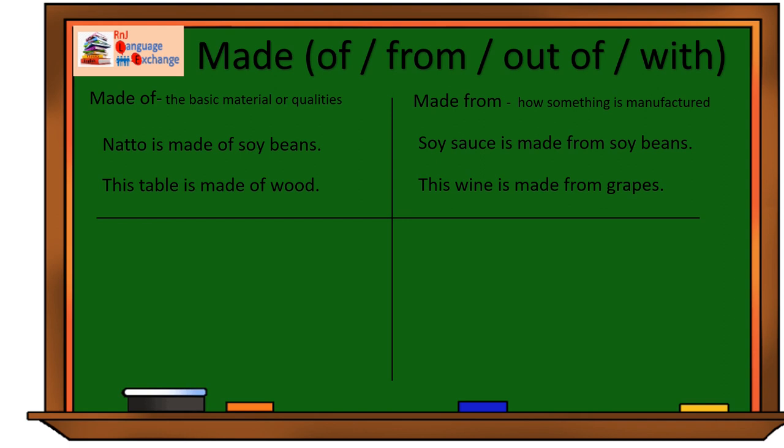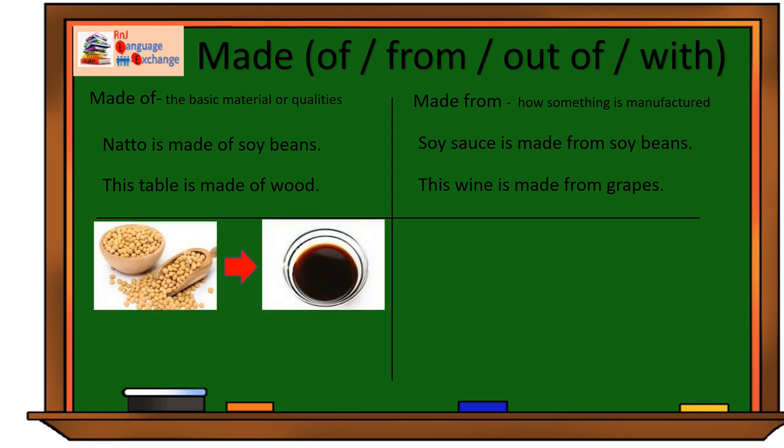In short, we can no longer see the material used. Here's our example. Soy sauce is made from soybeans. Well, I bet everyone knows how soy sauce looks like. I cannot see soybeans. I can only see soy sauce.